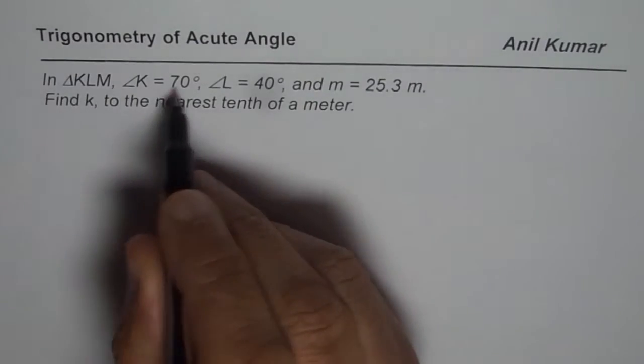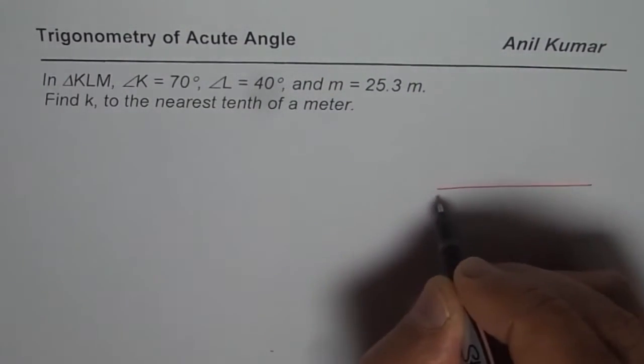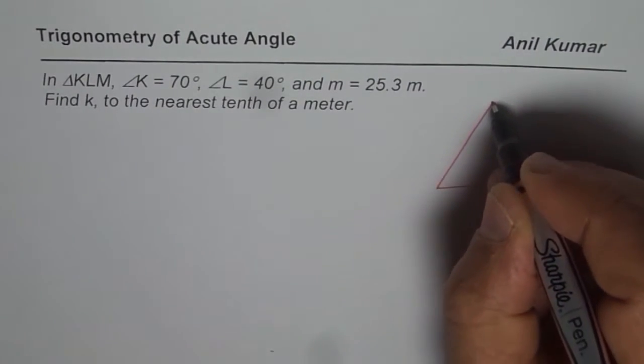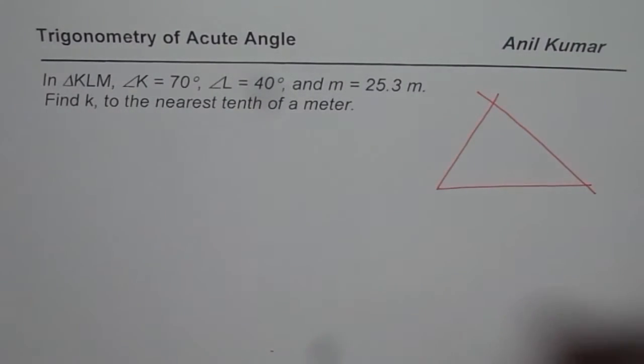So we are given angles K and L. Let's make a triangle first. Let's say that is K and this is L. K is 70 degrees, so it's kind of like this. And L is 40 degrees. So let me just draw a line like this.